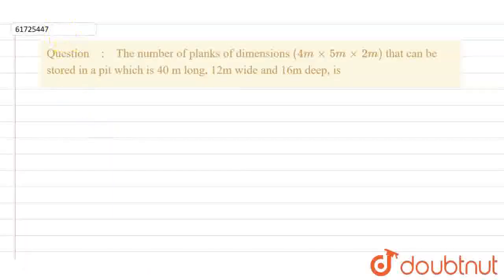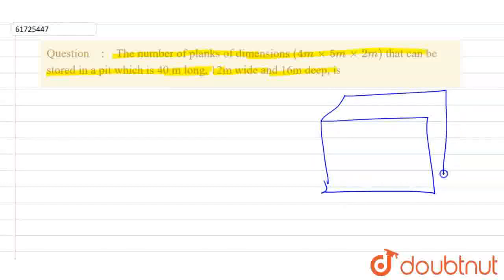What is the question? The question is that the number of planks of dimension is this, that can be stored in the pit which is 40 meters long, 12 meters wide and 16 meters deep. So I am saying that it is a cuboid, this is a big cuboid. This is a cuboid. I have made some dimensions like this.